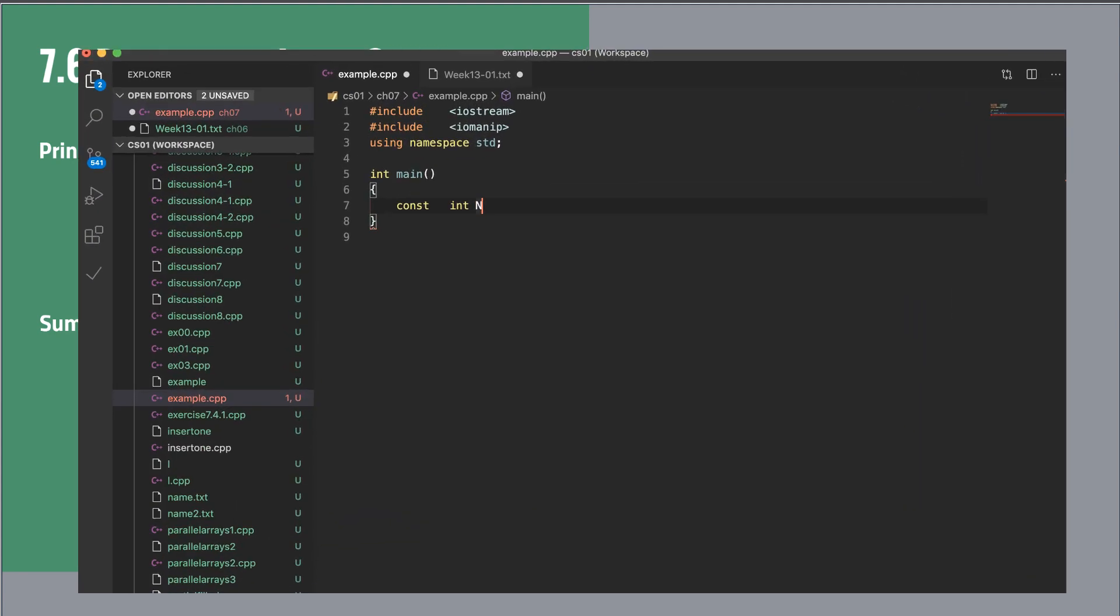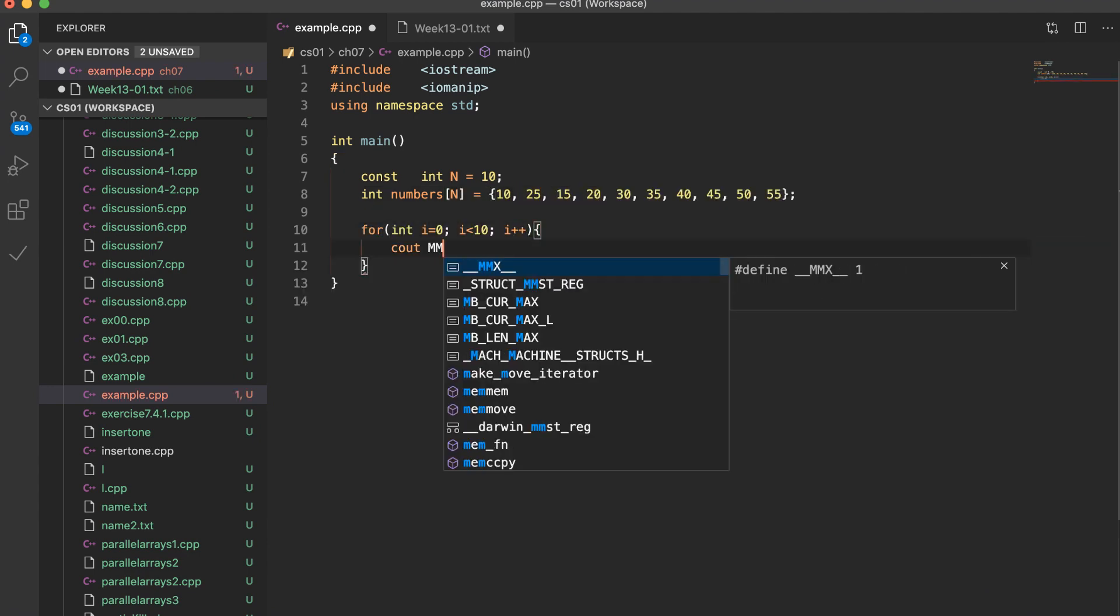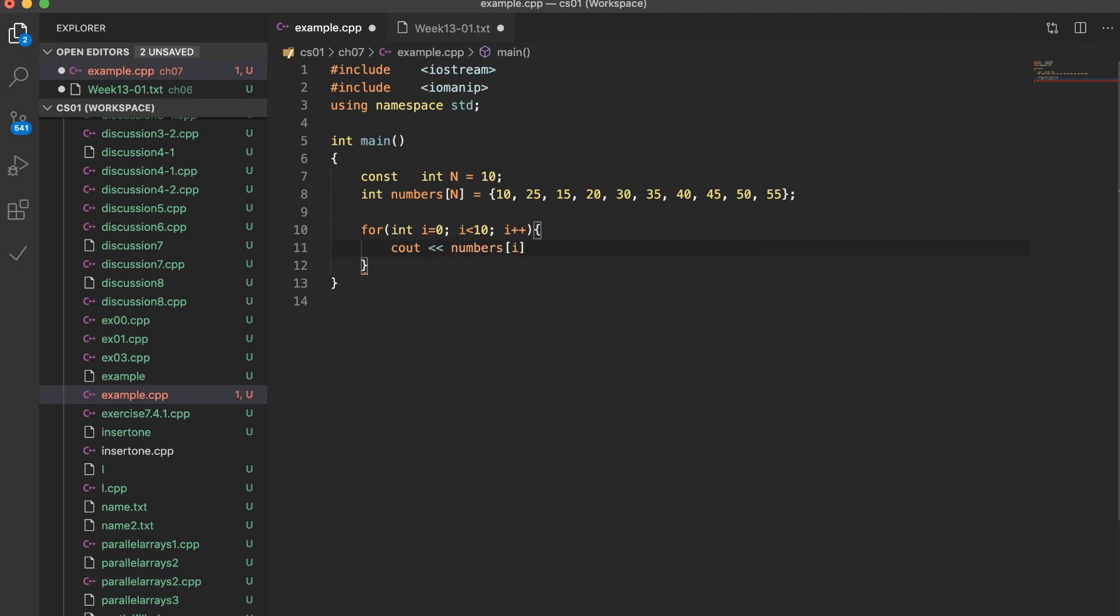Let's make a code to print out the entire elements in array. We are making 10 elements array and then first I'm going to use the regular for loop to print out. And then I'm going to do again with the range-based for loop and let's compile and run this program.